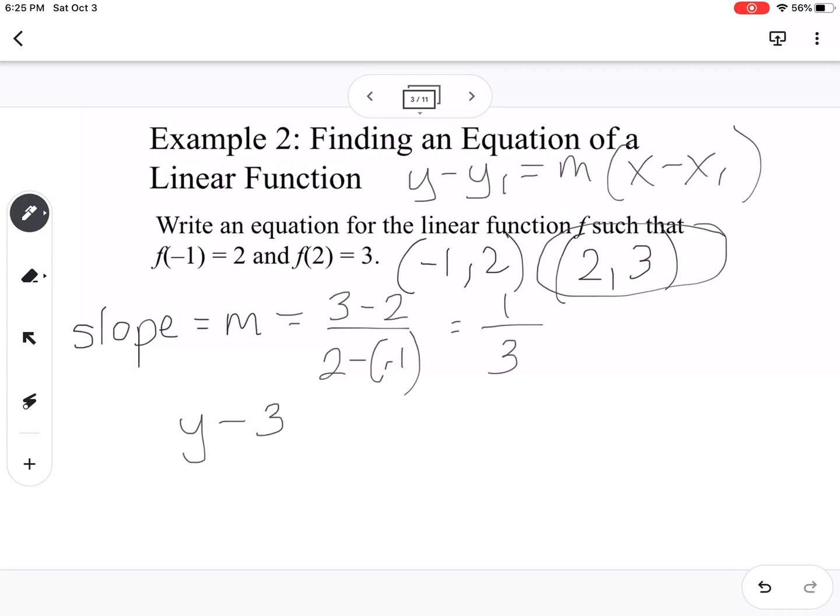So we have y minus, so now we can use either point. I'm going to choose to use the point (2, 3) because they're both positive. So I'm going to say y minus 3 equals 1/3 times x minus 2. Then I'm going to distribute the 1/3, so 1/3 x minus 2/3 equals y minus 3. And then in our last step, we're adding 3 to both sides, so we get 1/3 x. And then if we add 3 to both sides, we get 7/3, and there's our answer.